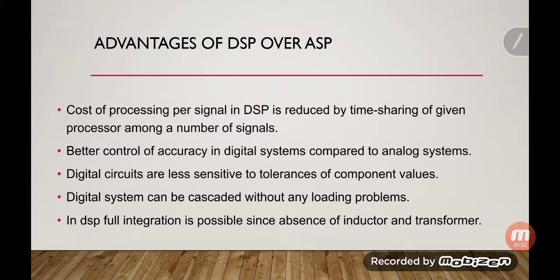We will now see the advantages of DSP over ASP. First, the cost of processing per signal in DSP is reduced by time sharing of a given processor among a number of signals. In DSP, we provide a sequence of digital pulses — one, zero, one, zero — and each bit has some bit period.